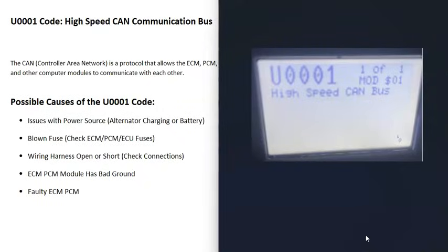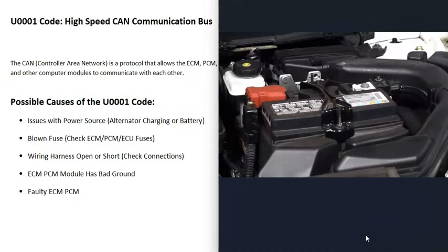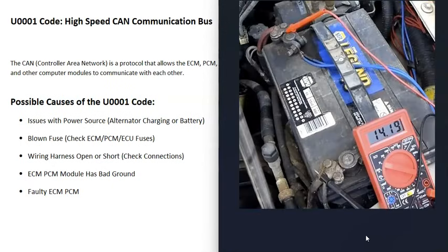What are some possible causes of a U0001 code? The first thing that can cause this is some kind of issue with the battery or the alternator — like the vehicle not charging correctly. Basically, all these different computer control modules need a stable, good power supply in order to work correctly. If they don't, it can throw them off and cause strange problems. So the first thing to do is check your battery and be sure the alternator is charging correctly.